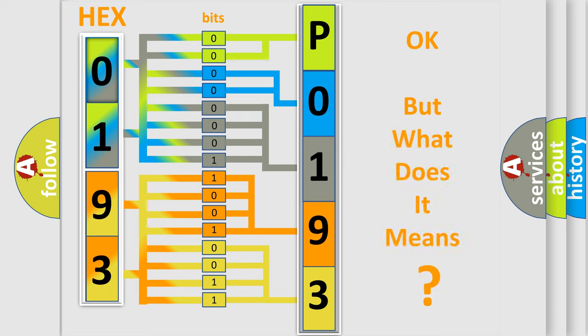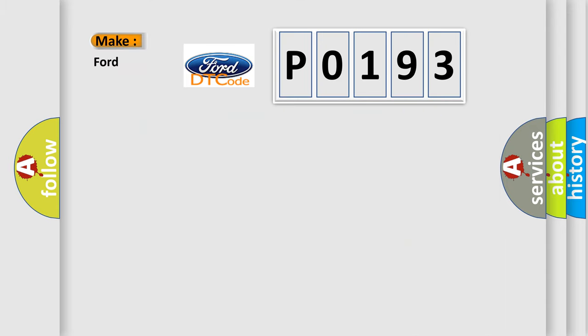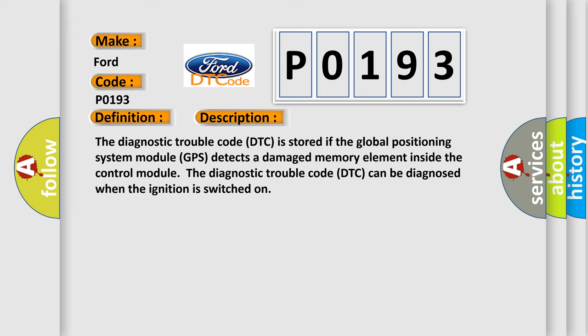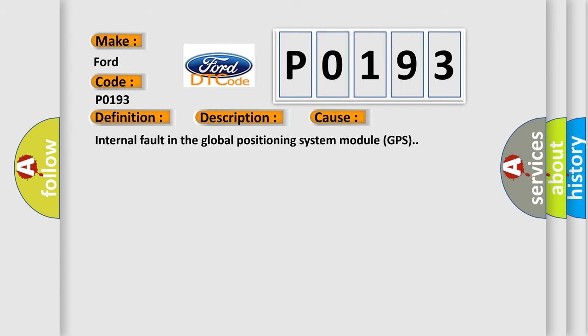The number itself does not make sense to us if we cannot assign information about what it actually expresses. So, what does the diagnostic trouble code P0193 interpret specifically for Infiniti car manufacturers? The basic definition is: control module internal fault. The diagnostic trouble code DTC is stored if the global positioning system module GPS detects a damaged memory element inside the control module. The DTC can be diagnosed when the ignition is switched on. This diagnostic error occurs most often in these cases: internal fault in the global positioning system module GPS.